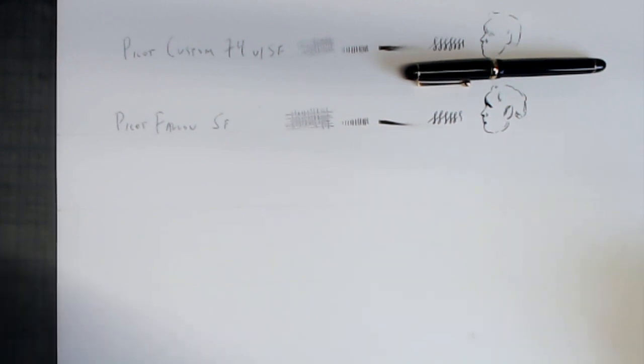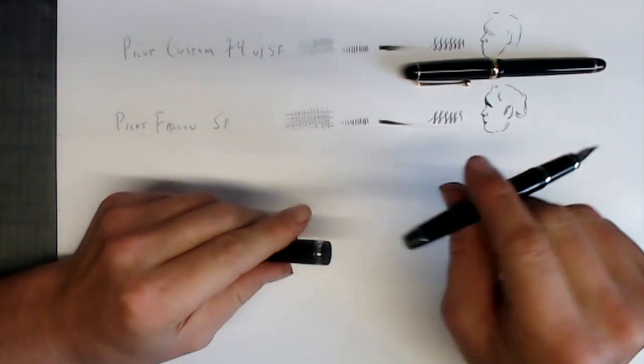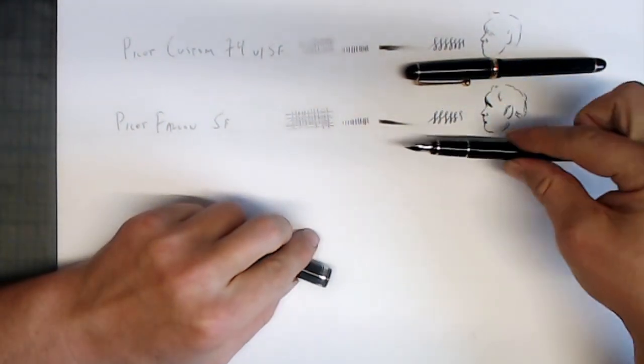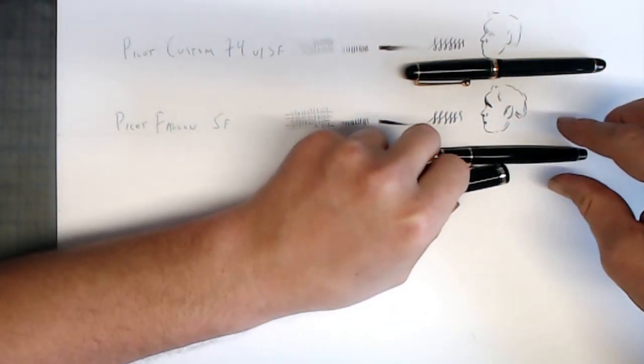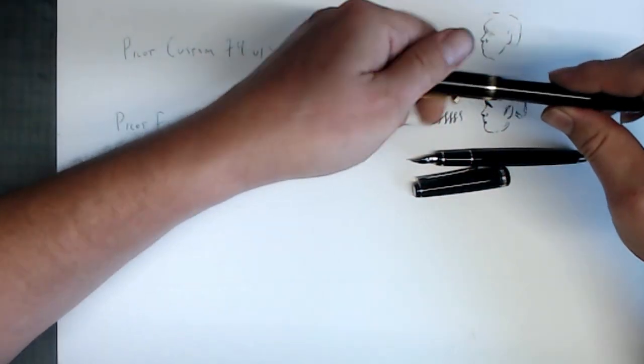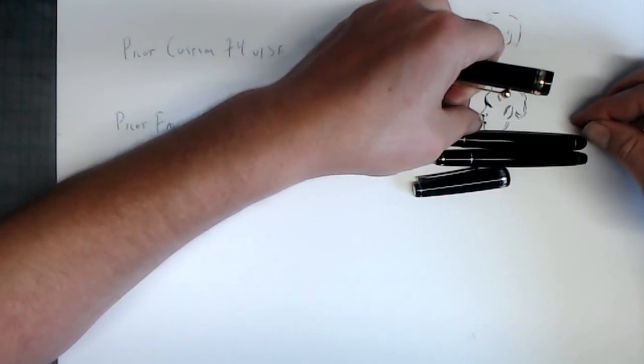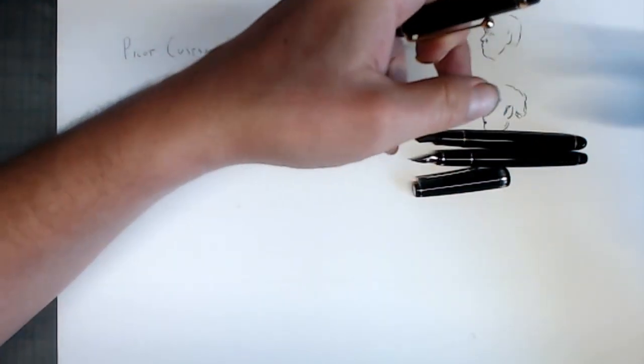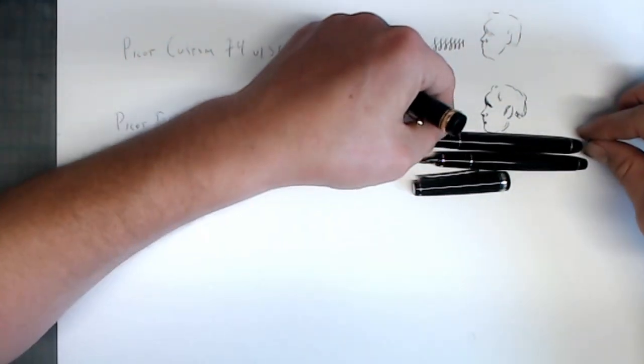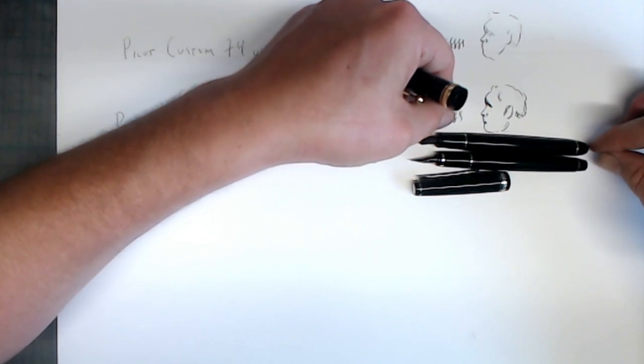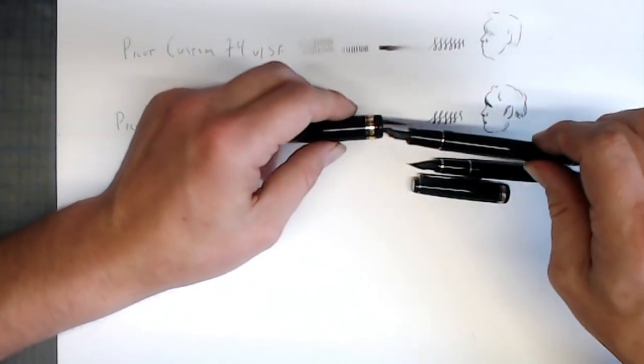Alright, now let's talk once again about the furniture. In terms of weight, very similar to the Custom 74. It's a little bit of a shorter pen. So we can compare it. A little bit shorter, but really not as much. All the Pilot pens are more or less the same size. In fact, I said it was shorter, but it's very similar in size. Same length as the Pilot Custom 74.